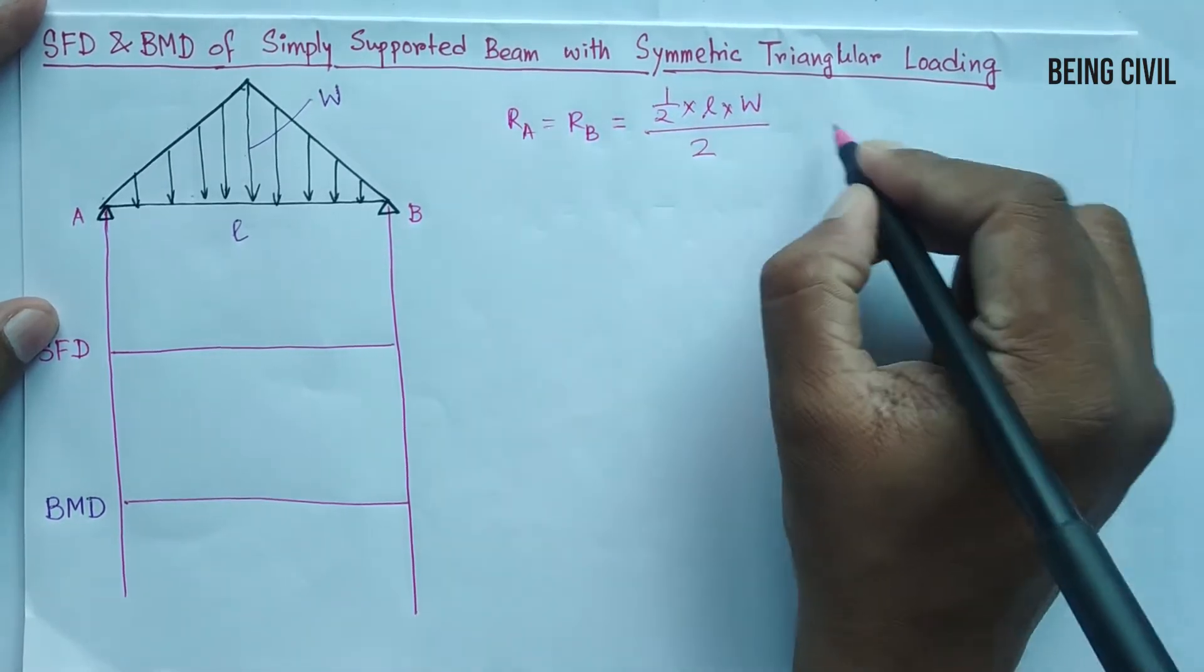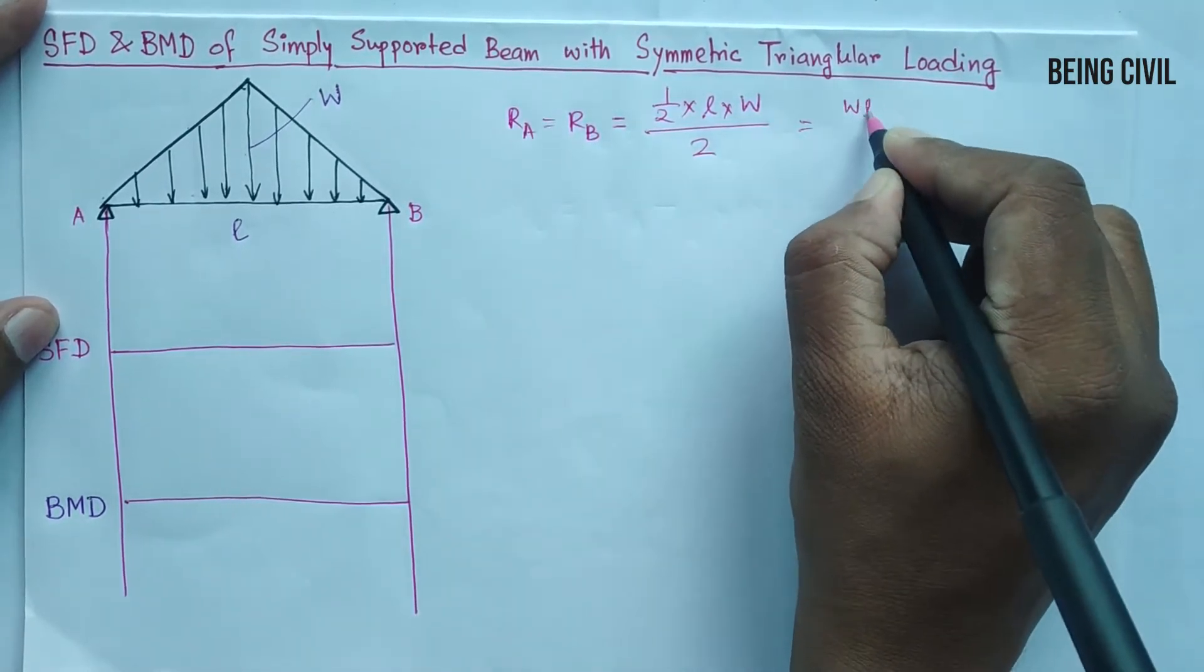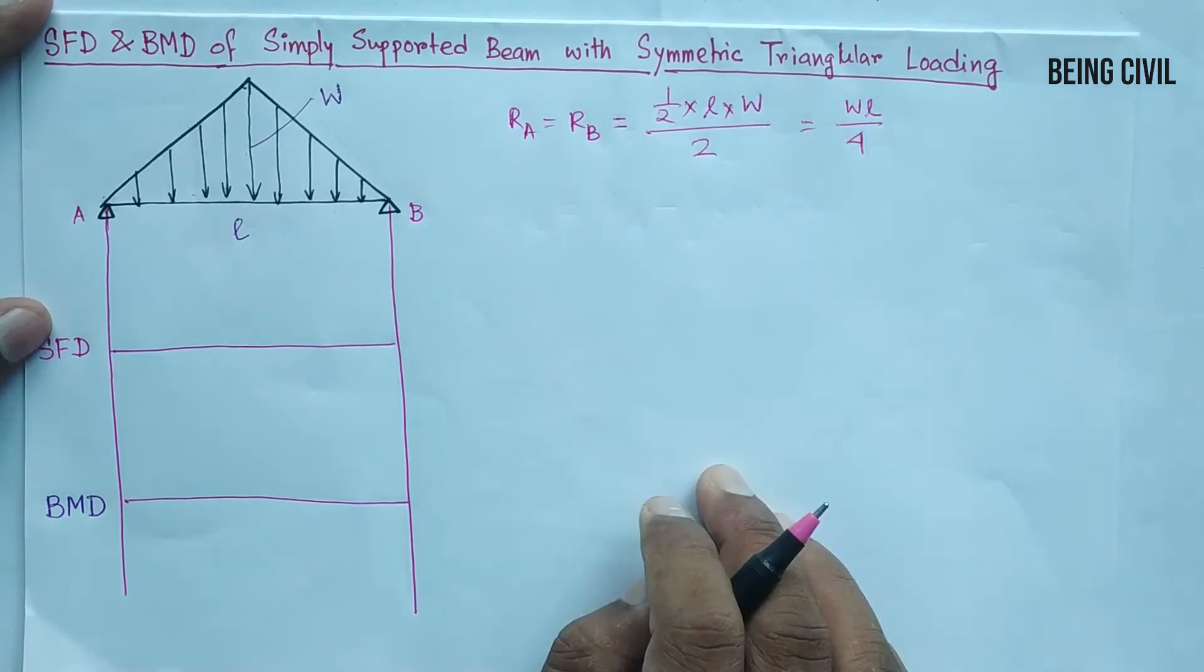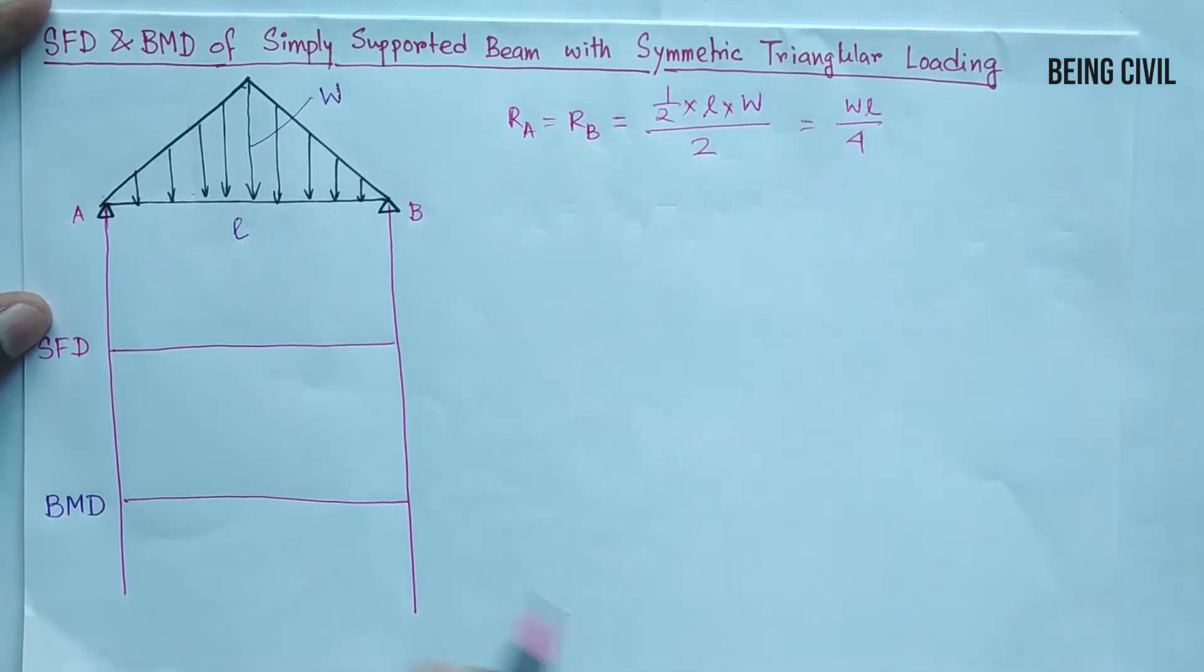It is the area of the triangle by 2, so reactions are WL by 4. Now we have to take a section at a distance of x.